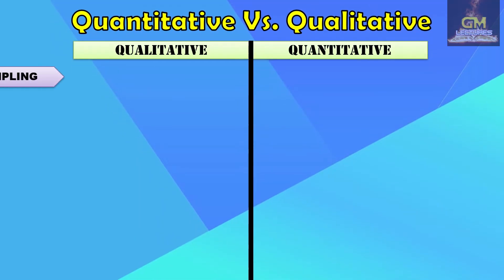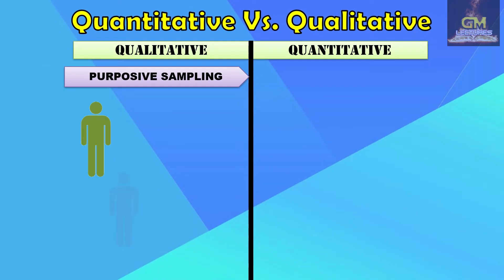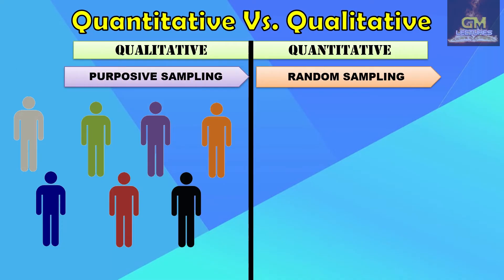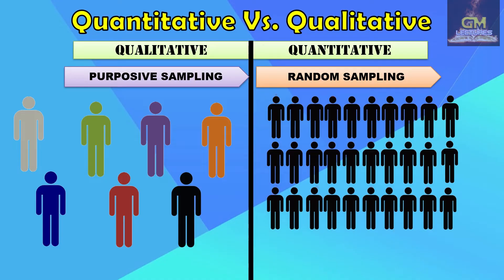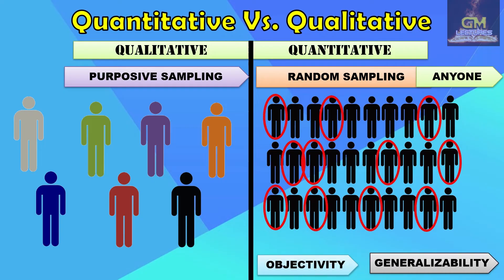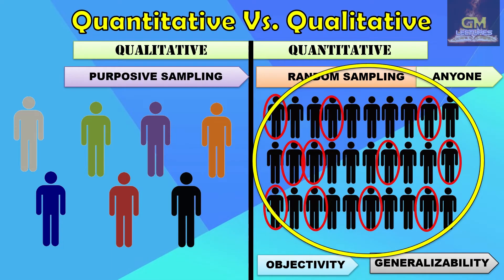In terms of sampling, qualitative research uses purposive sampling, meaning the researcher must be very critical and careful in selecting possible participants. Whereas quantitative research uses random sampling, meaning anyone could become a part of the study. The purpose of random sampling is objectivity and generalizability — whatever is true for the sample population can be considered true for the general population it represents.